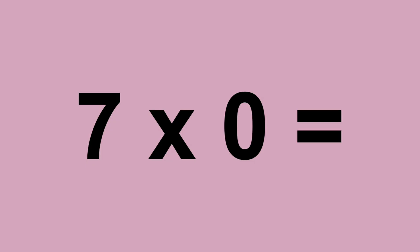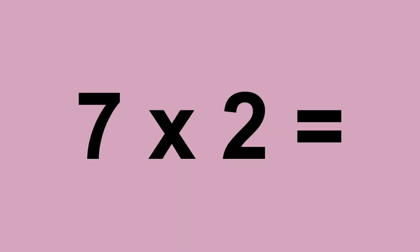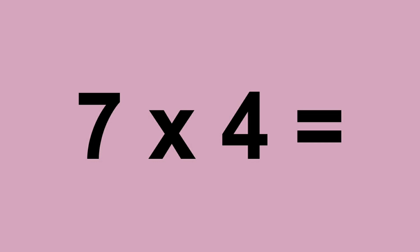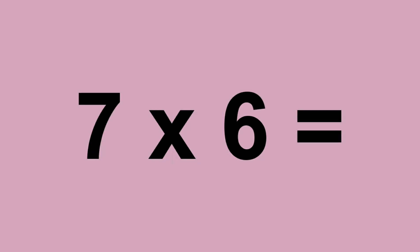Seven times zero equals zero. Seven times one equals seven. Seven times two equals fourteen. Seven times three equals twenty-one. Seven times four equals twenty-eight. Seven times five equals thirty-five. Seven times six equals forty-two. Seven times seven equals forty-nine.